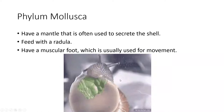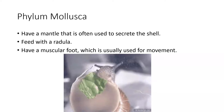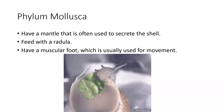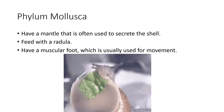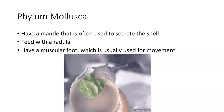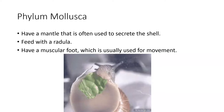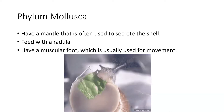Phylum Mollusca includes snails, slugs, octopuses, and more. They have a mantle that usually secretes a shell; in slugs without a shell, the mantle acts as a gas exchange organ. They feed with a structure called a radula — seen here as a snail uses it to eat lettuce. Everything in phylum Mollusca has a muscular foot, though it looks very different in a clam versus an octopus.